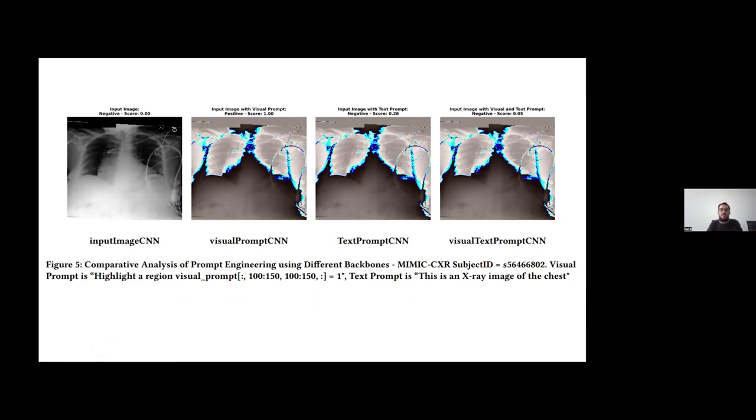Such as giving a prompt, highlight a region, highlight a region visual prompt, given that this condition, which is equal to this one. And text prompt we feed is, this is an x-ray image of the chest. And we give this image ID and these prompts to the model and it visualizes. And there is a score on the image, like input image with a visual prompt, positive score one. And with a negative text score, it says it's a negative and negative score is 0.26. And then when we combine it, we get a very bad score.